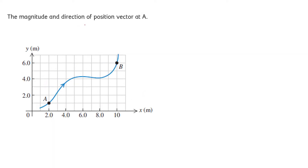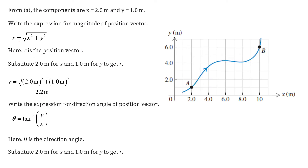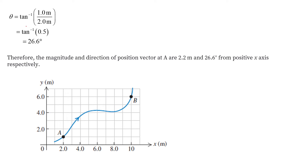Here, we have to find the magnitude and direction of the position vector at point A. We will use the formula according to the Pythagorean theorem, where r equals the square root of x² plus y². This comes out to be the square root of 5, which equals 2.2 meters. In order to find the value of theta, we write tan theta equal to opposite side upon adjacent side, where the opposite side equals y and the adjacent side equals x. So theta equals tan inverse of y divided by x, which comes out to be 26.6 degrees.